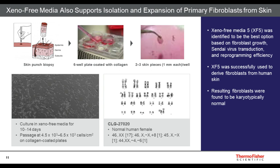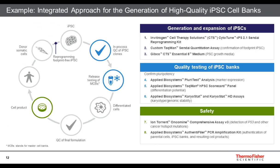In addition, we wanted to show that the XenoFree media supports isolation and expansion of primary fibroblasts. Many of you are using skin; I'm also talking to more people doing it from blood. Generally you take a skin punch biopsy, place two to three pieces in each well of a six-well collagen-coated plate, and culture for 10 to 14 days in XenoFree media. XenoFree candidate media five was successful for deriving fibroblasts from human skin, and the resulting fibroblasts were found to be karyotypically normal, as shown by the G-banding in the bottom right corner. That speaks well to the product's safety.